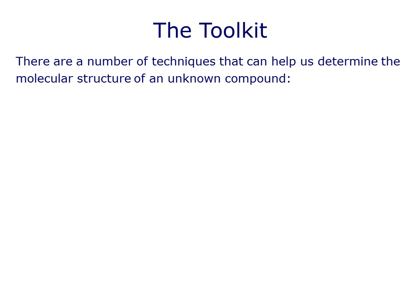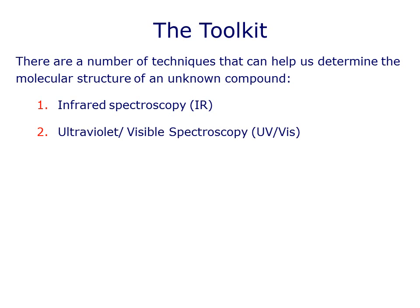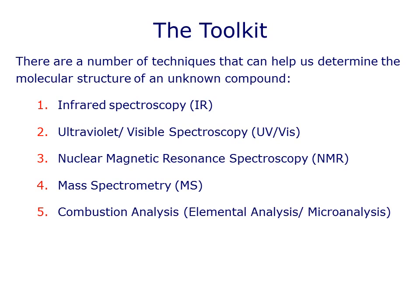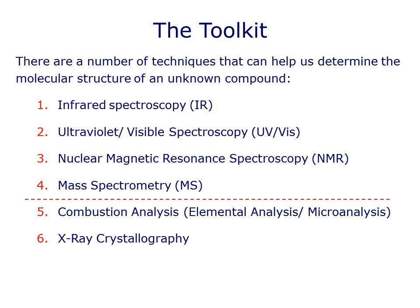In this course, we're going to talk about infrared spectroscopy, often known simply as IR, also ultraviolet visible spectroscopy or UV-vis, nuclear magnetic resonance spectroscopy, NMR, and mass spectrometry, MS or mass spec for short. Other important techniques, like combustion analysis and x-ray crystallography, will wait for another day.